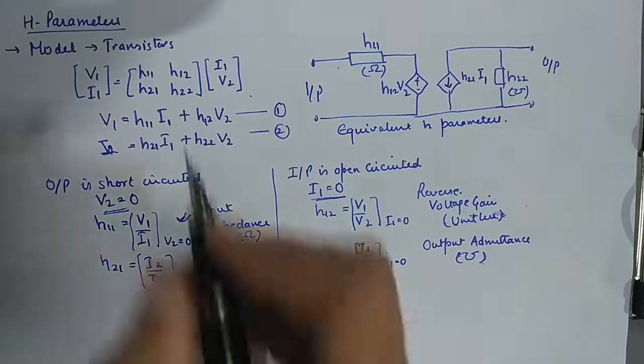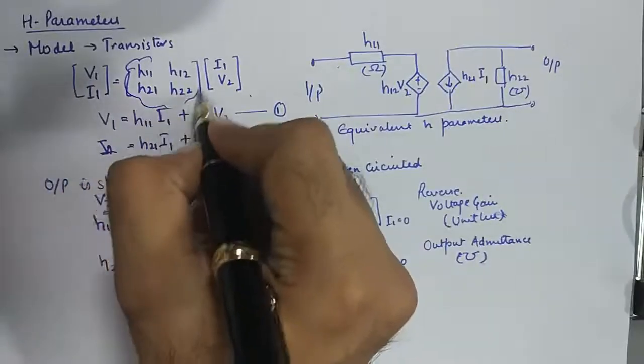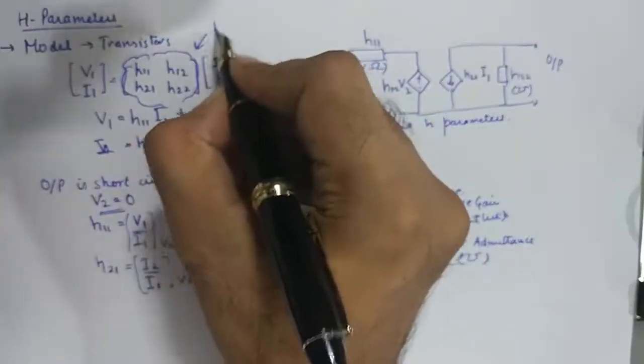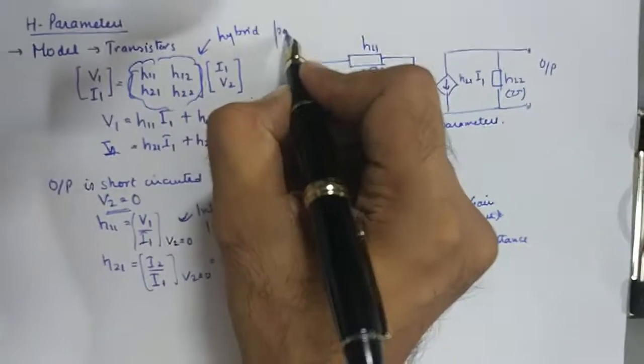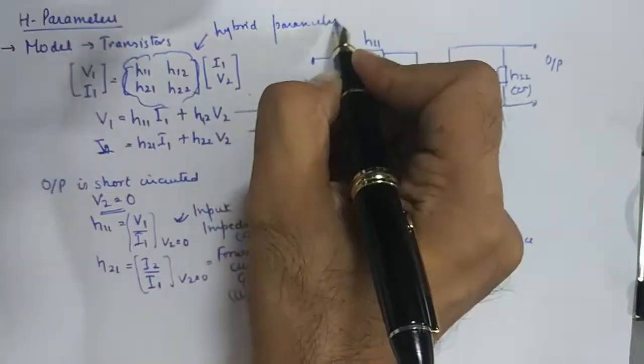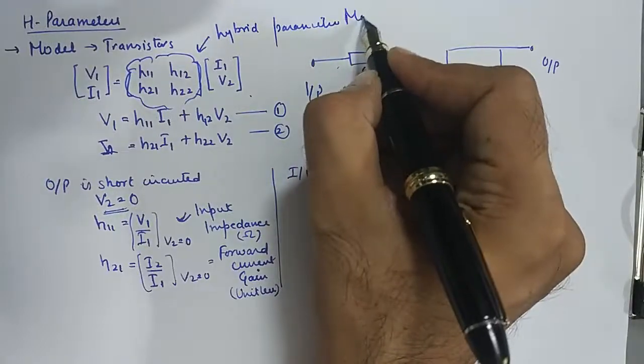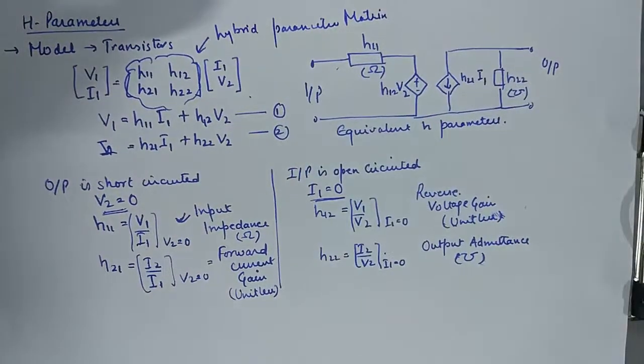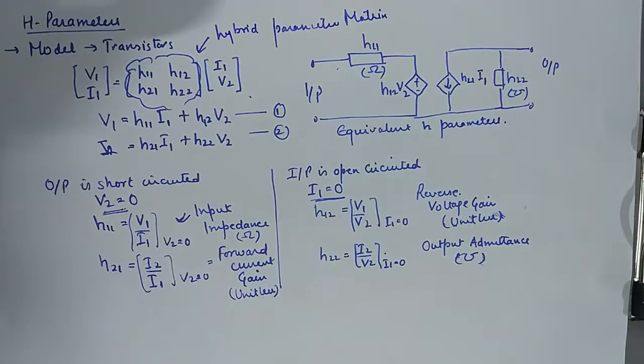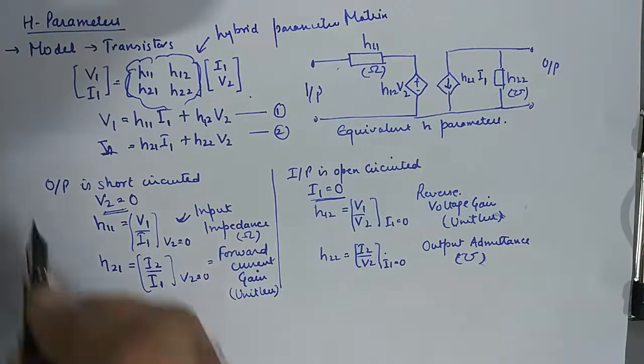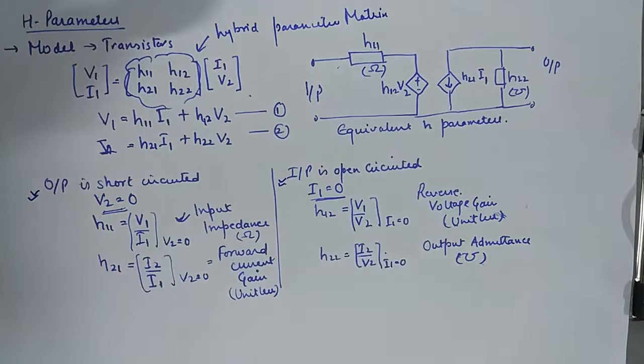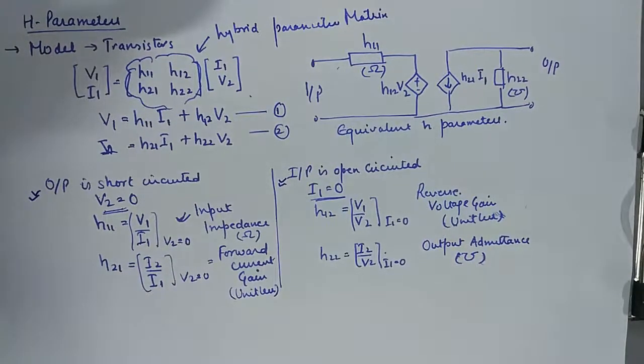That is how you calculate these parameters in this matrix known as hybrid parameter matrix. And to calculate these parameters in this equation we need to put in these two conditions. If you remember these two conditions for hybrid parameters you will be able to find them pretty easy.